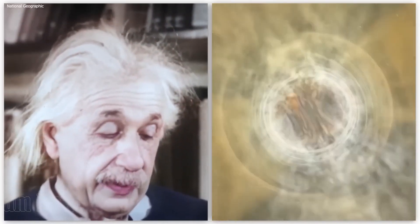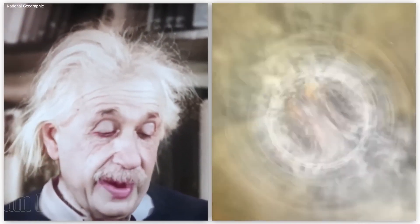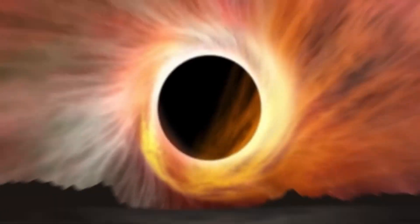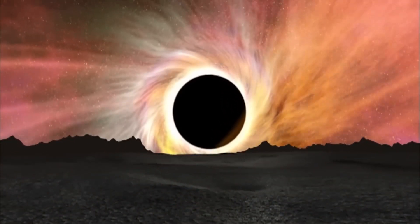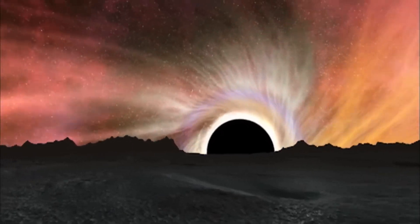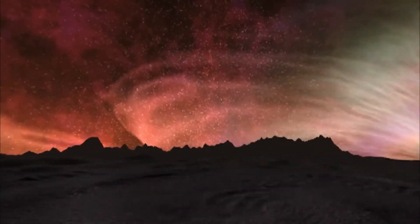When a star runs out of fuel, it can no longer generate the pressure needed to counteract the force of gravity pulling it inward. If the star is massive enough, its core will simply collapse under the weight of its own gravity, eventually creating a black hole where a star once stood.